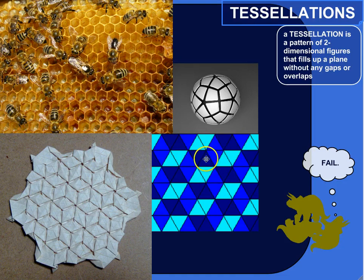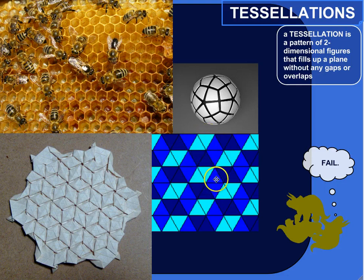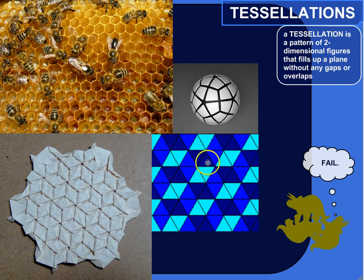Here's one that's more computer-generated. It's just a bunch of equilateral triangles filling up a surface, and they're shaded differently, which also gives that 3D effect if you look at it in a certain way.